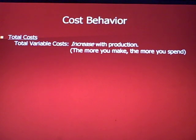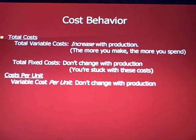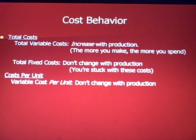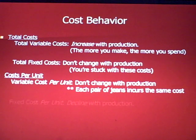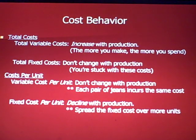Total variable costs increase with production — the more you make, the more you spend. Fixed costs don't change with production; you pay interest on the loan whether you produce 10 pairs or a thousand. Cost per unit is different: variable costs per unit don't change with production — material costs $5 a pair and labor costs $5 a pair regardless. Fixed cost per unit, however, declines with production.